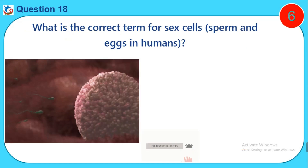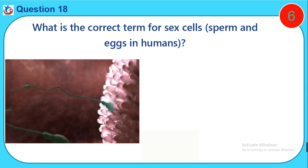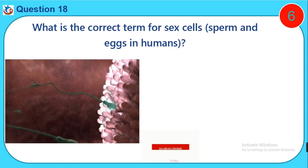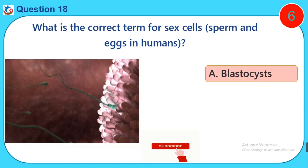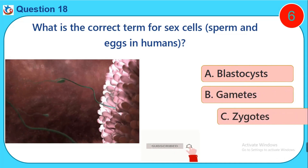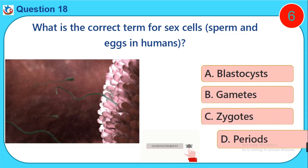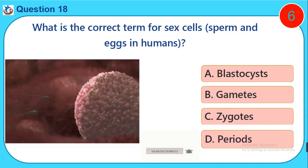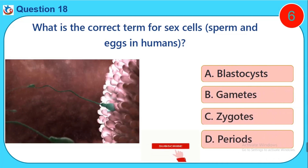Question eighteen: What is the correct term for sex cells? A) Blastocysts, B) Gametes, C) Zygotes, D) Periods.